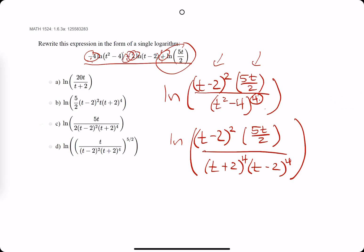Now, we're just canceling. We have two t minus 2s on top. Get rid of both of those, and we get rid of two t minus 2s on the bottom, leaving us with two more. Our final answer should be 5t over 2, all divided by t plus 2 to the 4th times t minus 2 squared.